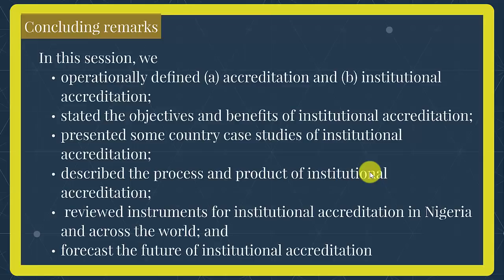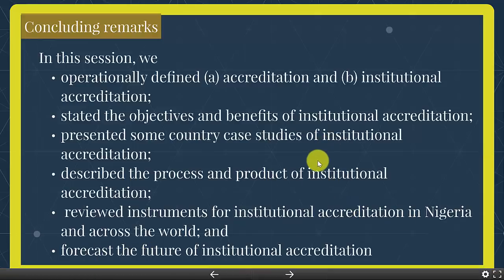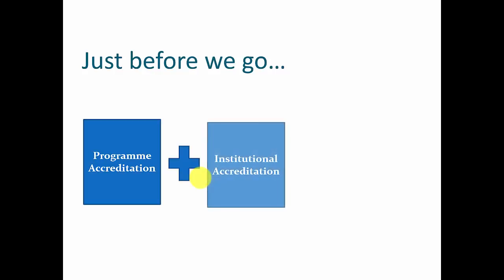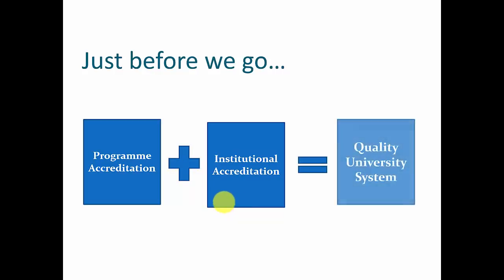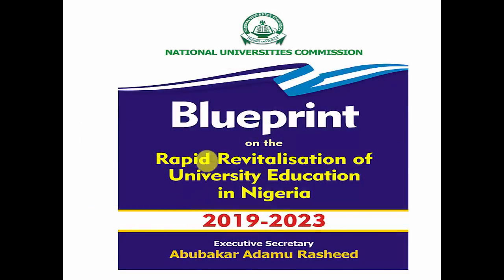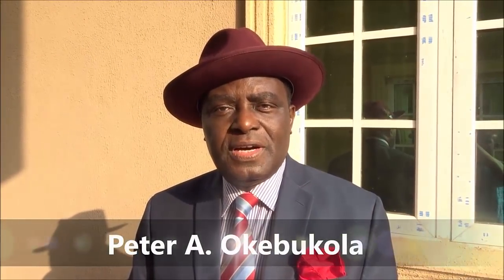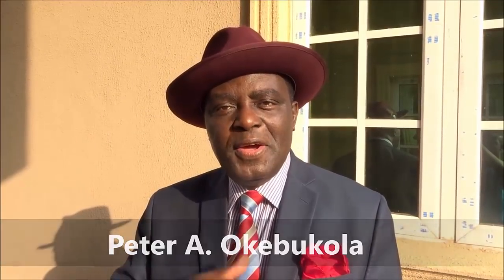In conclusion, in this session we operationally defined accreditation and institutional accreditation, studied objectives and benefits, presented country case studies, described the process and product, and reviewed instruments for institutional accreditation. Program accreditation, as currently practiced in Nigeria, plus institutional accreditation combined will yield a better quality university system and serve as a blueprint for the rapid revitalization of university education in Nigeria by 2023 — the Rashid Plan accomplished. Thank you, God bless. That brings us to the end of this episode; I hope to see you again very soon.